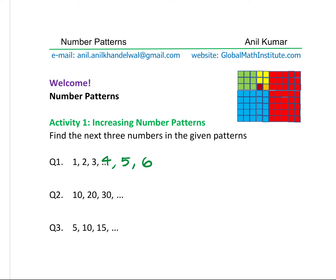Now let's look into question number 2: 10, 20, 30. So next comes what? Well, it should be 40, right? So 10, 20, 30, 40, and then 50, 60. The pattern series could go on, as we have seen. Sometimes what we do is we write three dots after the series, saying that it further increases.